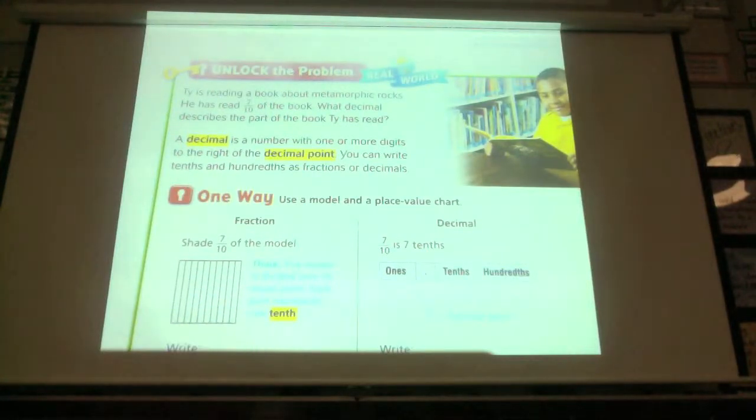This is 9-1, and since I wasn't there to teach it, I'm going to do our video. Ty is reading a book about metamorphic rocks. He has read 7 tenths of the book. What decimal describes the part of the book that Ty has read?